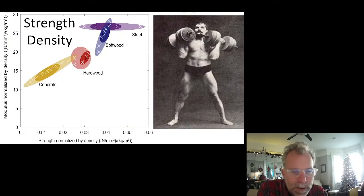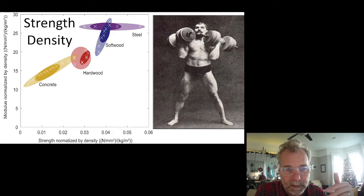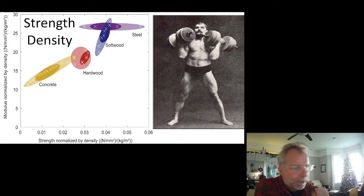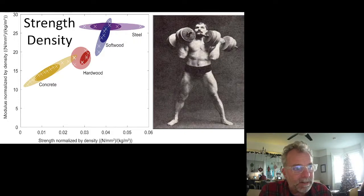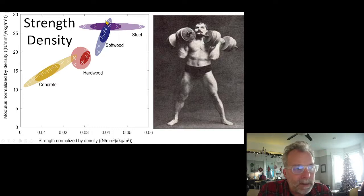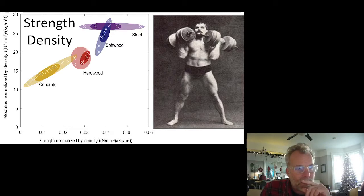Let's look at the strength of wood. It's easy to perceive wood as less strong than steel, and in fact wood is less strong than steel and less strong than concrete — but it is a lot closer than you might think. This graph shows you the strength density and stiffness density. At the strong end of the softwoods, there is a similar strength density to the mid-range of steel.